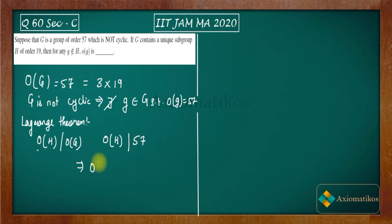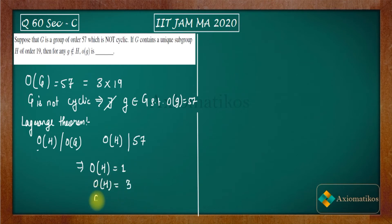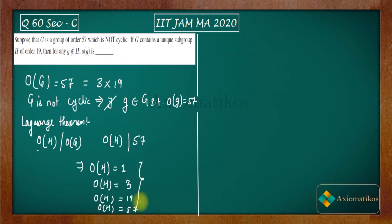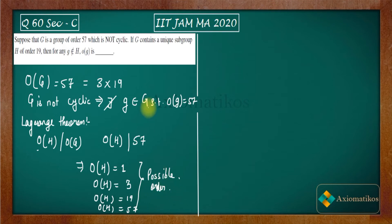The order of the group is 57, so this implies the possible subgroup orders are: 1, 3, 19, or 57. These are the only possible orders that any subgroup can have.